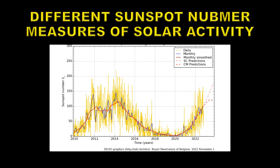This is Solar Cycle 24 on the left, and on the right you can see the beginnings of Solar Cycle 25. We're during the rise phase of Solar Cycle 25 at the moment. There are three different measures of sunspot number here: the yellow is the daily sunspot number — highly variable, varying by factors of two in just a day or two. The blue curve is the monthly average sunspot number, with still quite large variations. The red curve is the smooth sunspot number — a 13-month averaged sunspot number — and that's the one used to parameterize solar cycles.